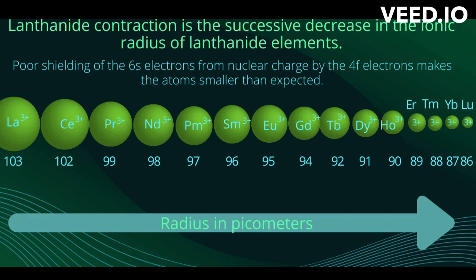In today's lesson we are going to learn more about lanthanide contraction. Lanthanide contraction, also called lanthanoid contraction, in chemistry, is explained as the steady decrease in the size of the atoms and ions of the rare earth elements with increasing atomic number from lanthanum through lutetium.